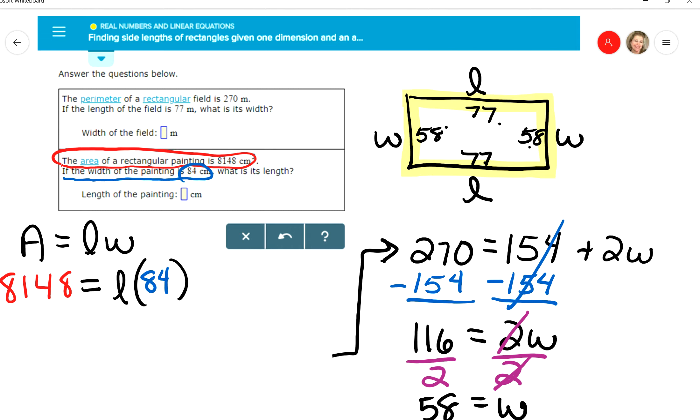All I need to do to solve for the length is divide off the 84 so that those cancel. That will give me the length. And so take 8148, divide it by 84, and that gives me an answer of 97, and that's what would go right here, 97, and this one's in centimeters.